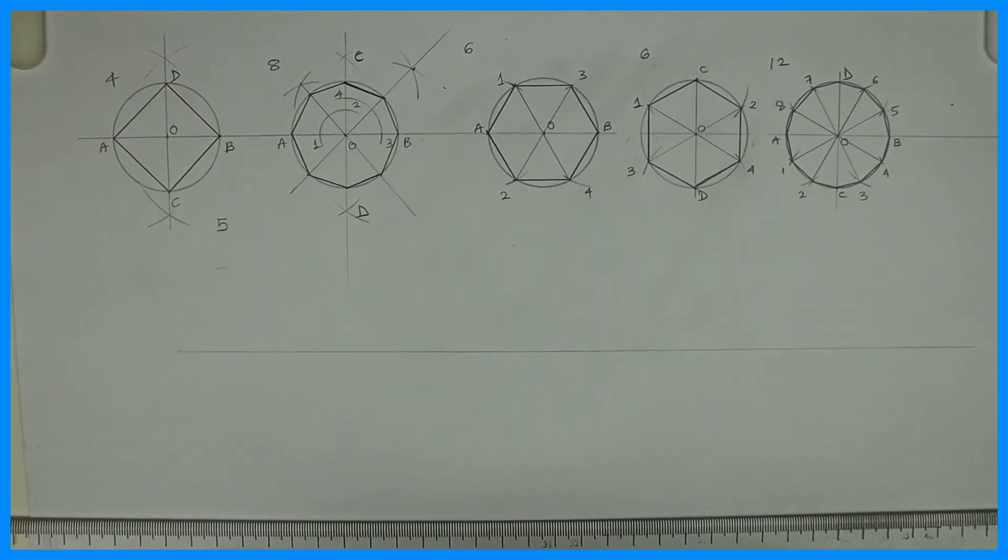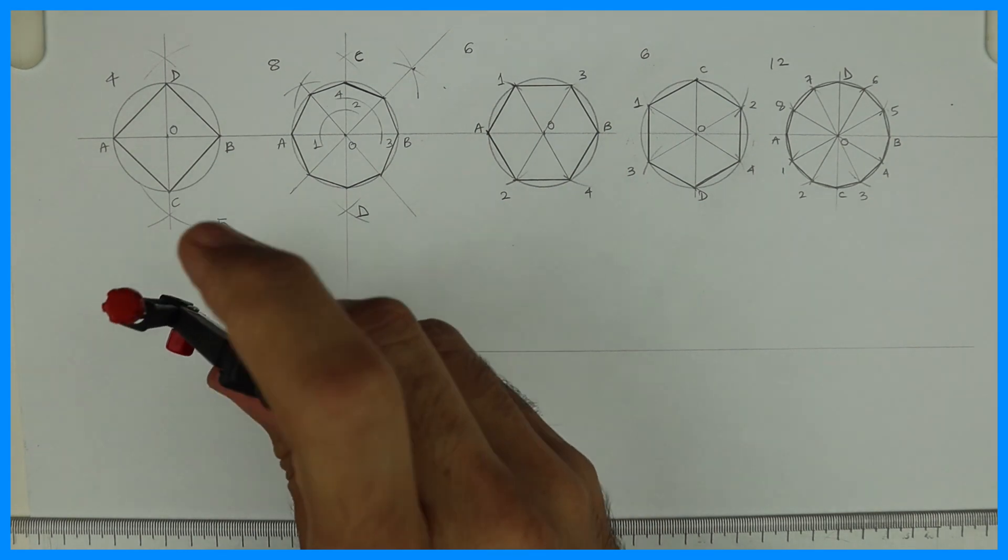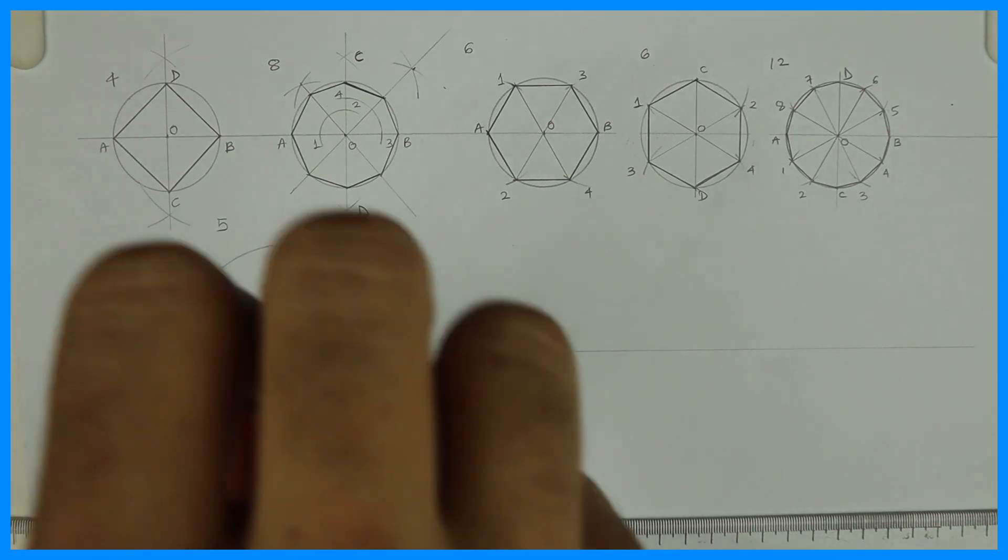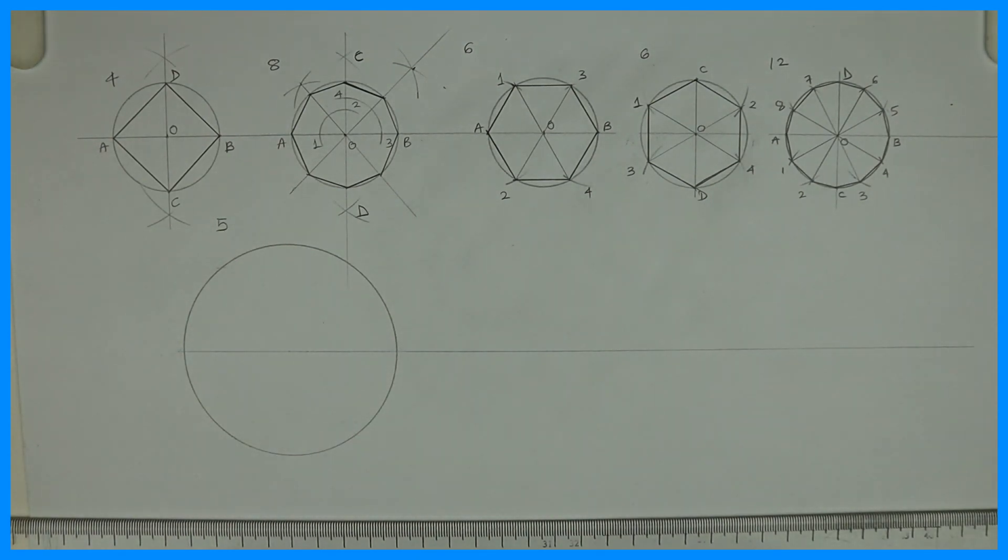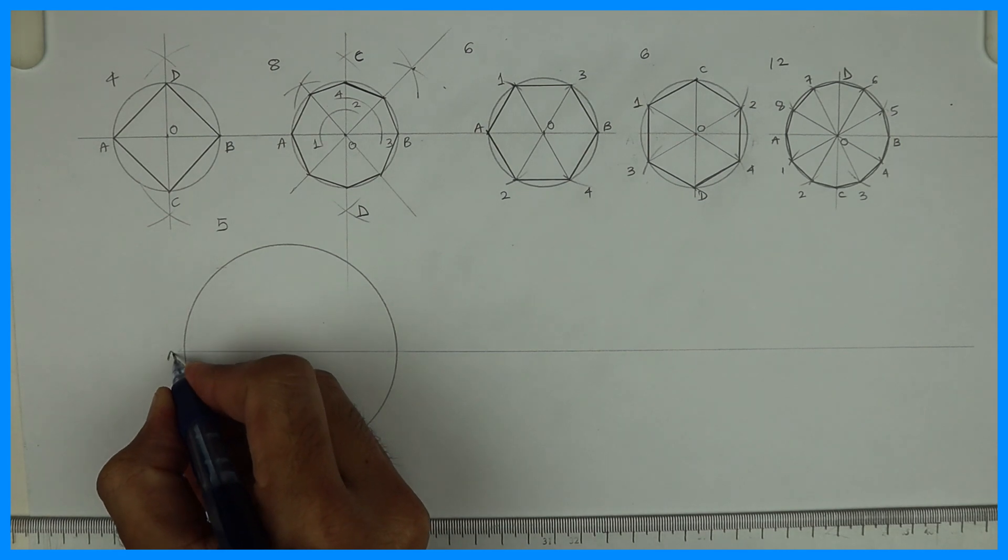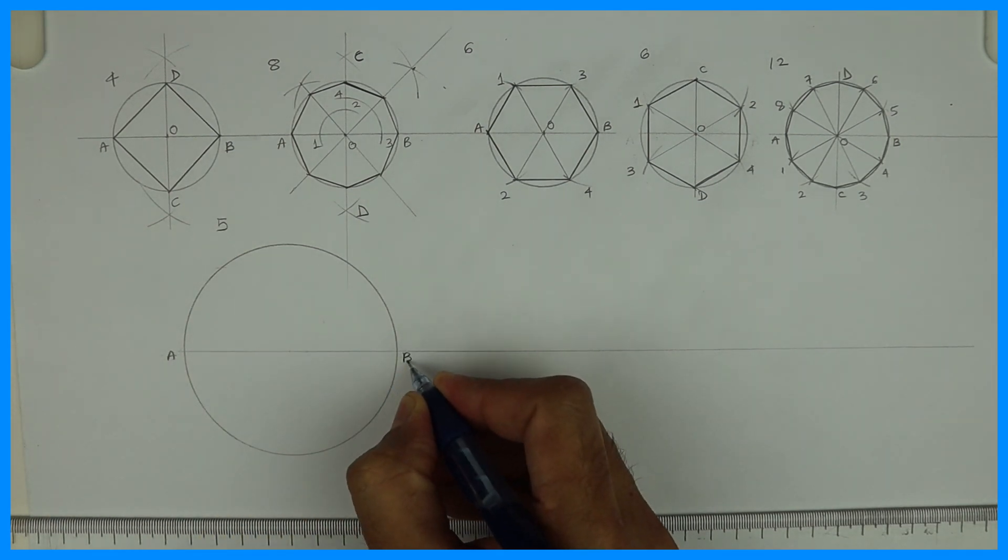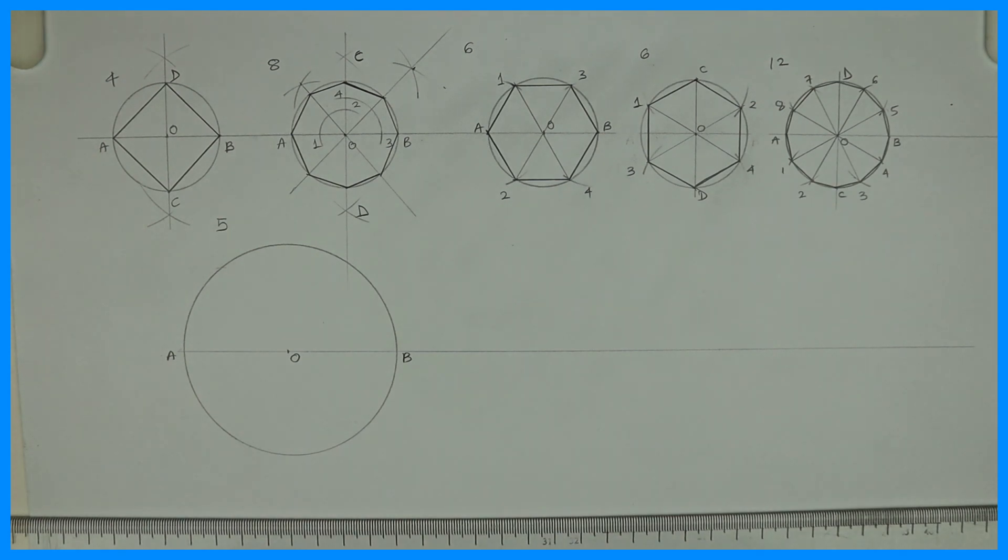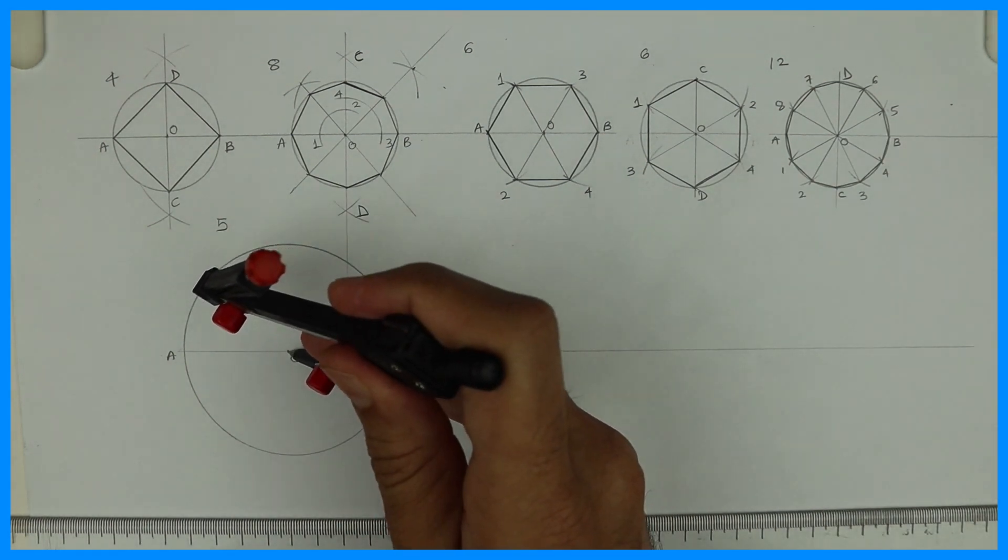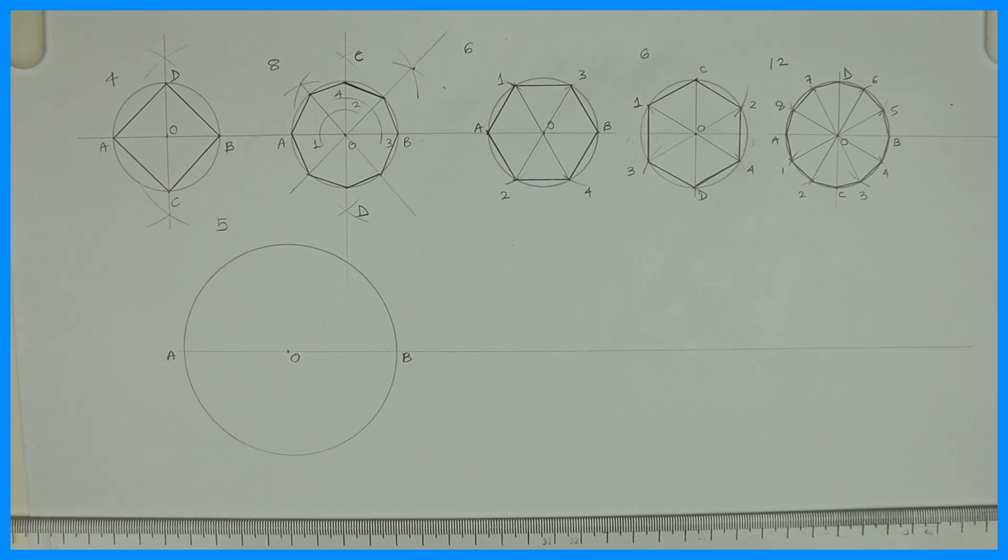So first we will draw a circle. Now in my last video we have seen how to draw square, hexagon, octagon - all those polygons inside a circle. Now in this we'll try pentagon, heptagon, or we can say septagon also. So first we will draw a circle, we'll write diameter AB and O.